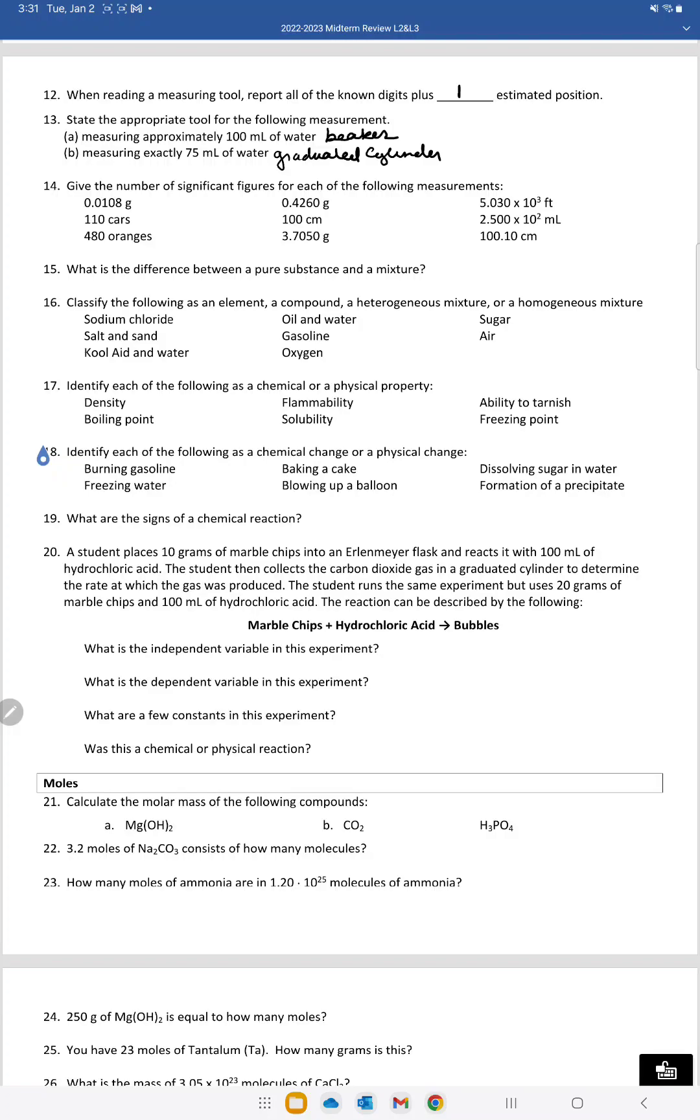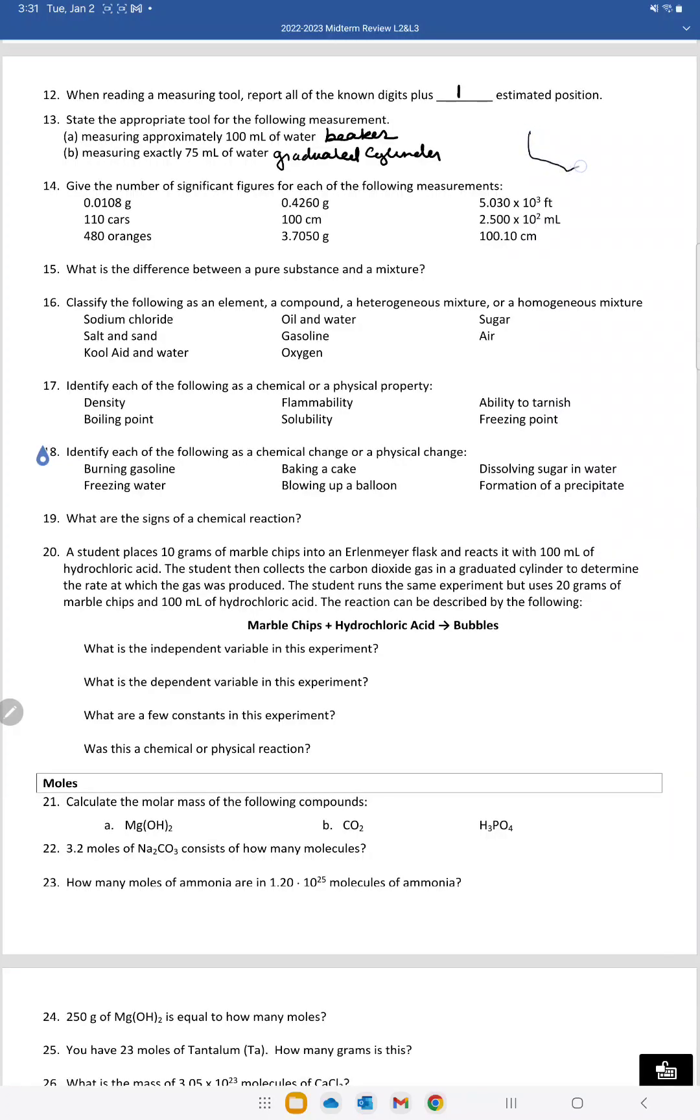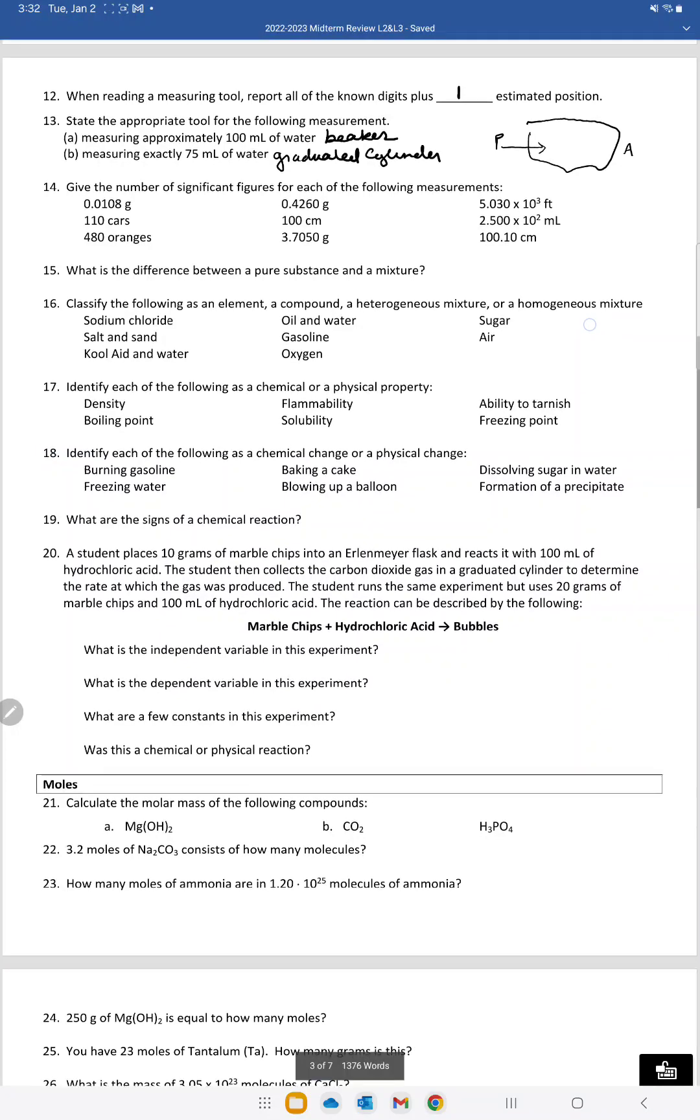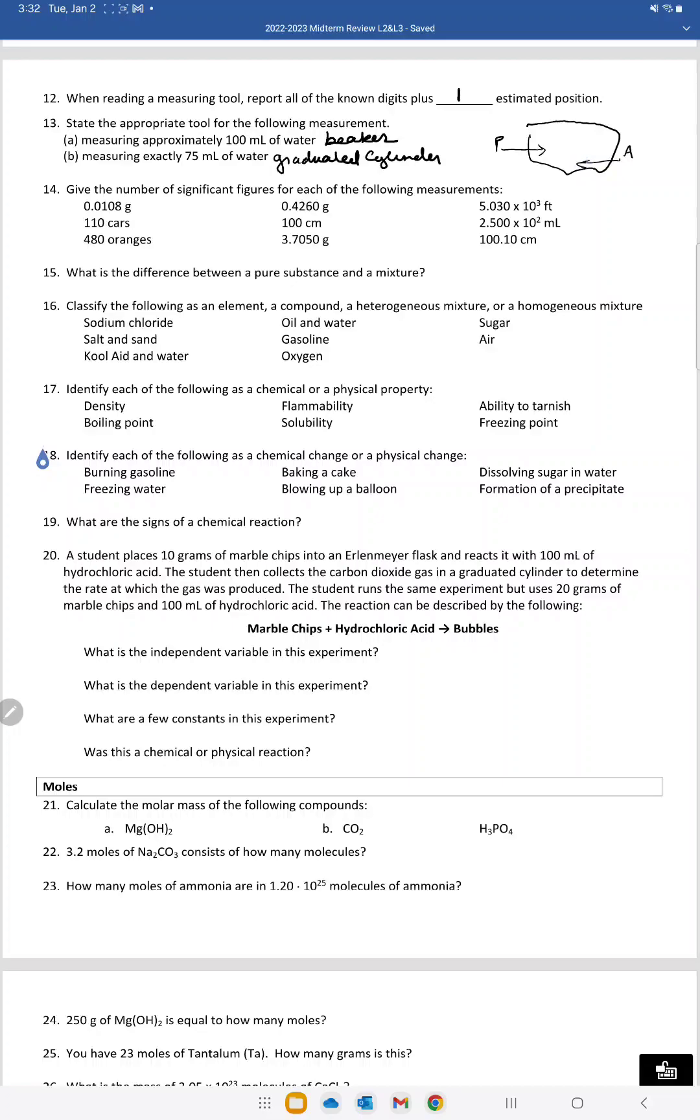Number of significant figures. Remember that's the Atlantic Pacific rule. If the decimal is present, I start at the Pacific, go from left to right, start counting at the first non-zero digit, and count everything that follows. If the decimal is absent, I start at the Atlantic, go right to left, start counting at the first non-zero digit, count everything that follows.